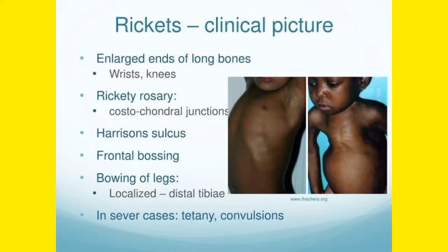Harrison's sulcus occurs because during inspiration the diaphragm pulls the softened portion of the ribs, creating a sulcus known as Harrison's sulcus. Frontal bossing is the enlargement or protrusion of the frontal bone. So the key terminologies are: enlarged ends of long bones, rickety rosary, Harrison's sulcus, frontal bossing, and bowing of the legs.